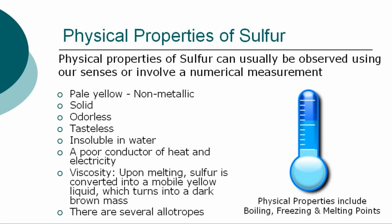The more specific physical properties of sulfur can usually be observed using our senses or involve a numerical measurement, such as determining its boiling, freezing, and melting points. At room temperature, it is a pale yellow non-metallic substance. Sulfur is odorless, tasteless, and insoluble in water. It is a poor conductor of heat and electricity. Upon melting, sulfur is converted into a mobile yellow liquid, which turns into a dark brown mass.